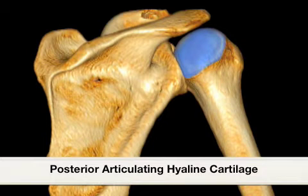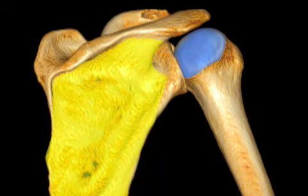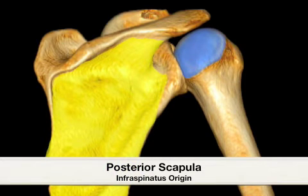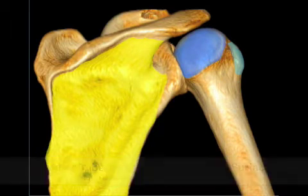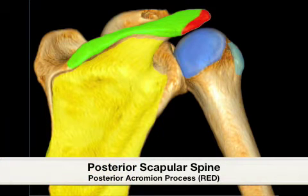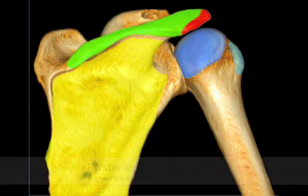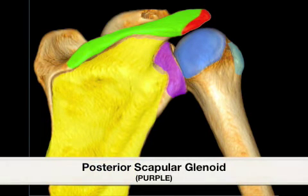In our anatomical review, we have the posterior surface of the humeral head with articular hyaline cartilage in blue, the proximal origin of the infraspinatus tendon in yellow, with a more laterally light blue landmark of the greater tuberosity, which acts as the insertion of the infraspinatus tendon. Highlighted in green is the spine of the scapula with a red posterior acromion process, which serves as a great palpation point to begin examination of the infraspinatus tendon. Highlighted in purple is the posterior bony glenoid of the scapula.